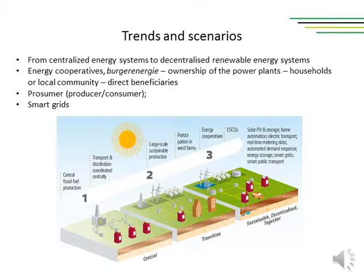In the picture above you can see that decentralized networks have different hierarchy and design. The most common term for operation of such a network is 'smart grid.' A smart grid is an electrical grid which includes a variety of operational and energy measures, including smart meters, smart appliances, renewable energy resources, and energy efficiency resources. The improved flexibility of the smart grid permits greater penetration of highly variable renewable energy sources, such as solar power and wind power, even with the addition of energy storage.